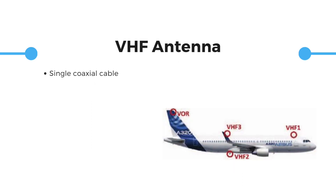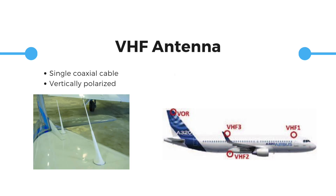The antenna used in VHF communication is a single coaxial cable routed to each VHF transceiver and is vertically polarized. The radio frequency N-type female connector is attached to the aluminium base where the aluminium foil gasket is connected with the electromagnetic sealant, which makes an electrical contact between the gasket and the aircraft structure.